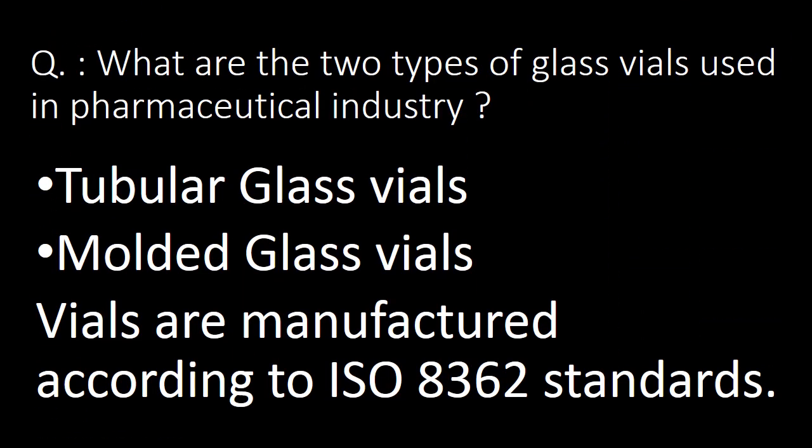What are the two types of glass vials used in the pharmaceutical industry? Tubular glass vials and molded glass vials are the two types commonly used. Glass vials used in the pharmaceutical industry are manufactured according to ISO 8362 standards.